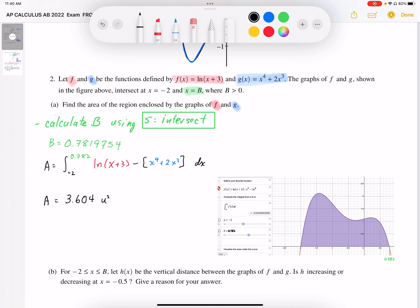Now, we do have an alternative in that we could find the area. We can find the area under the log function from negative 2 to 0.782.